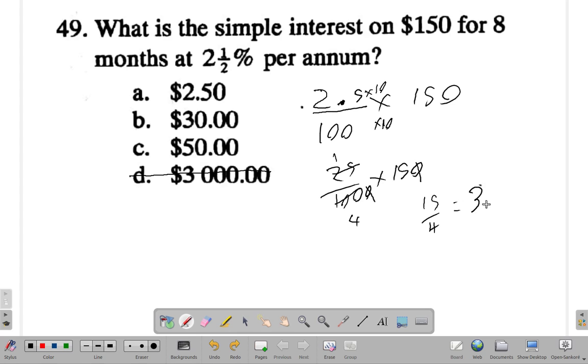4 times 3 is 12, remainder 3. So it's 3 and ¾, which is 3.75. But then it's only 8 months, 8 out of the 12, so it must be less than 3.75, right?